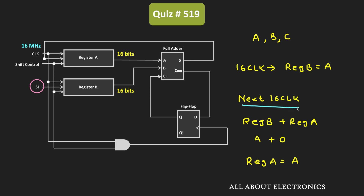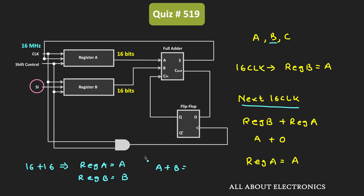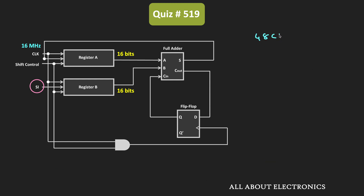During those 16 clock cycles, number B also gets shifted into register B. So after 16 plus 16 clock cycles — total 32 clock cycles — register A equals number A and register B equals number B. During the next 16 clock cycles, A plus B is performed. After 16 plus 16 plus 16 — that is 48 clock cycles — A plus B is performed and the sum is stored in register A, so register A equals A plus B.